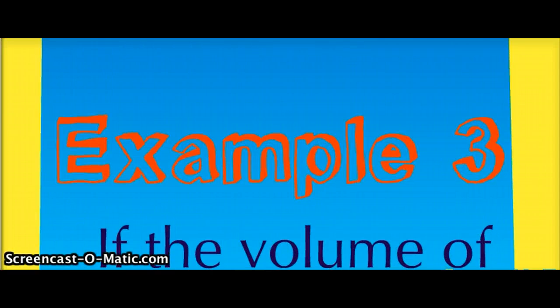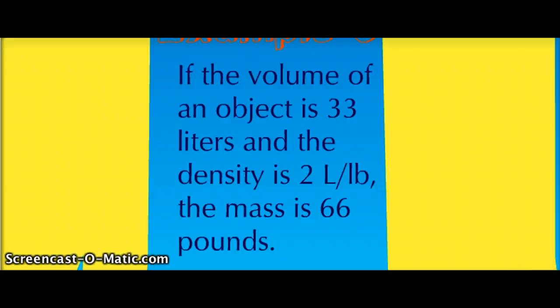And the last example. If the volume of an object is 33 liters and the density is 2 liters per pound, the mass is 66 pounds.